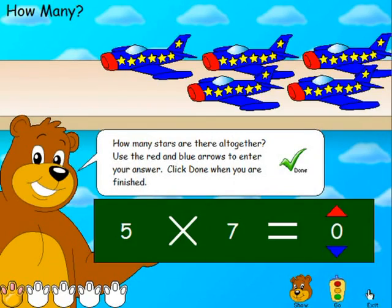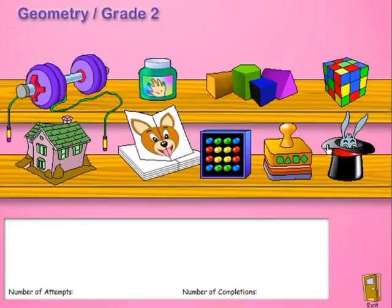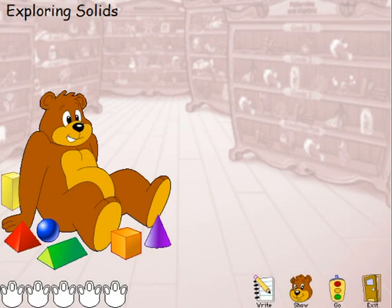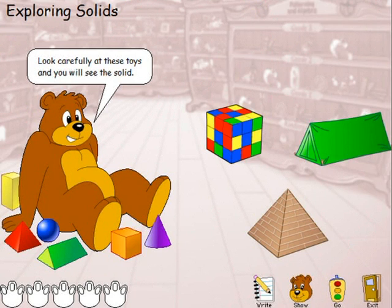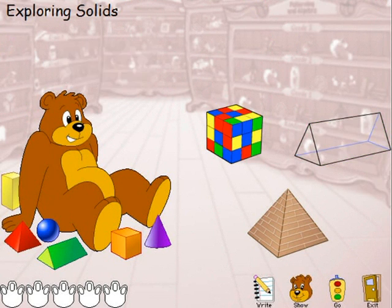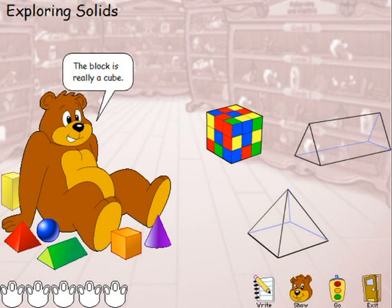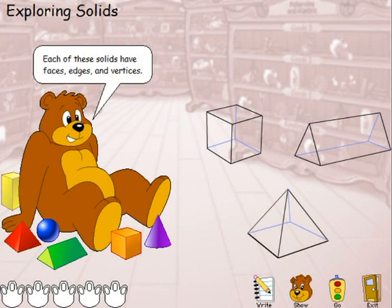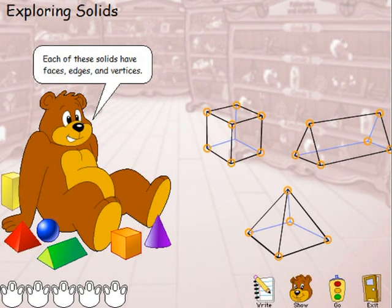On number sense numeration, let's go out and select another strand — geometry — and now we're going to do Grade 2 work: Exploring Solids. There are many solids in our toy store. Look carefully at these toys and you will see the solid. The tent is really a triangular prism; the pyramid is really a square-based pyramid; the block is really a cube. Each of these solids have faces, edges, and vertices. In this activity you will be counting the number of faces, edges, and vertices.